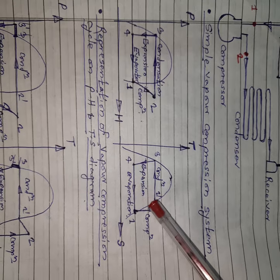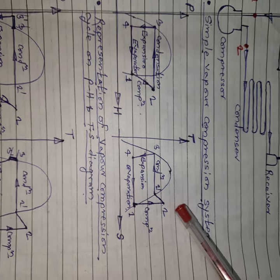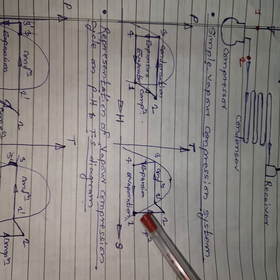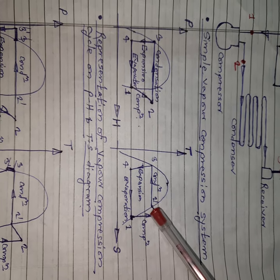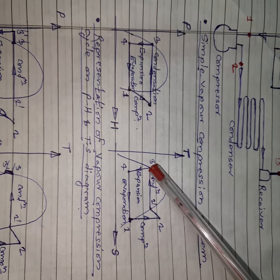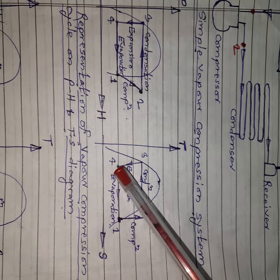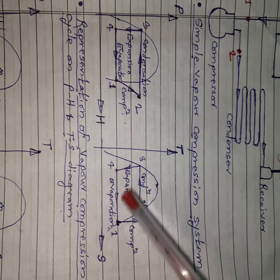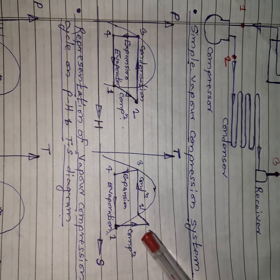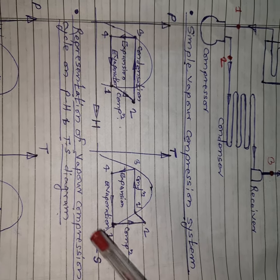The same diagram is shown on the TS diagram. 1 to 2: adiabatic compression — entropy remains constant and temperature rises, shown as a straight line. 2 to 2' is removal of sensible heat; 2' to 3 is removal of latent heat. 3 to 4 is the throttling process. 4 to 1 is the constant pressure evaporation process. This is the representation of the vapor compression cycle on the TS diagram.